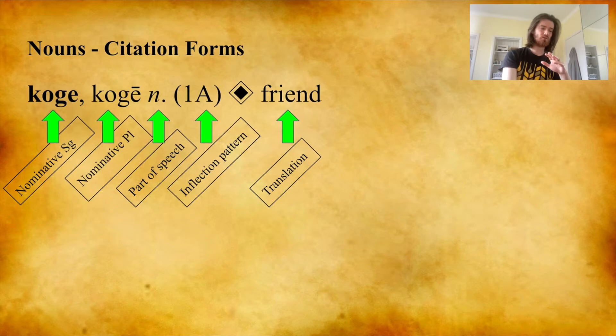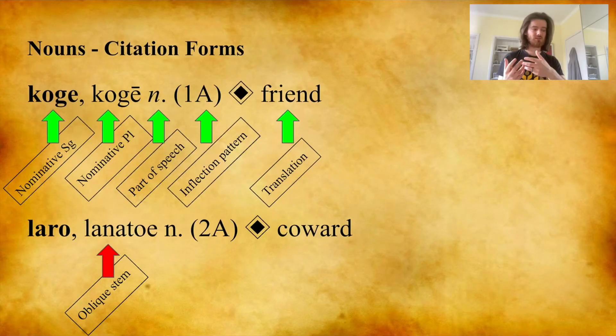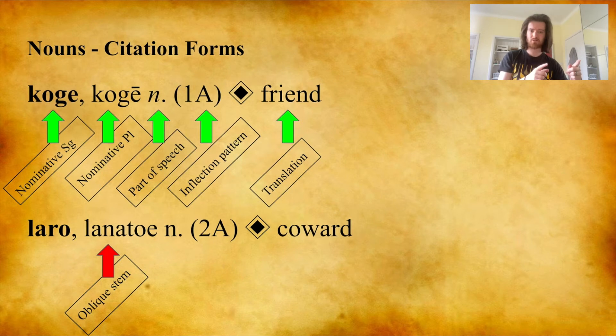Instead, nouns inflect for case and number. So the forms given here are the nominative singular and the nominative plural. Koge and koge look pretty similar to each other — this isn't always the case. Take the noun laro, meaning coward, which has the nominative plural lanatoe. We need the nominative singular and the nominative plural because often the nominative plural preserves what's called the oblique stem — the stem used for the majority of inflections. The nominative singular is actually the exception.